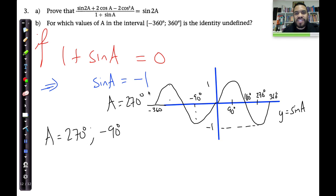That's specifically in this interval. If you wanted to know in general, then we can say A is equal to 270 degrees plus N times 360, where N is an element of the integers.